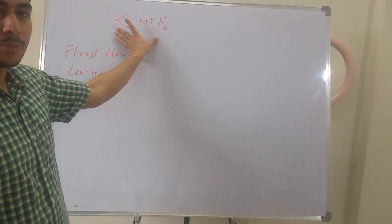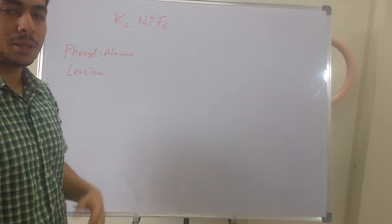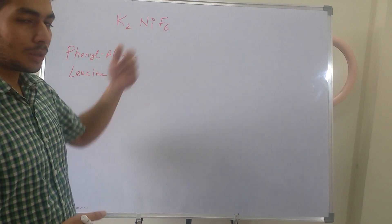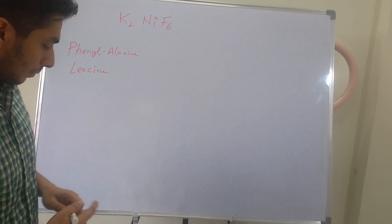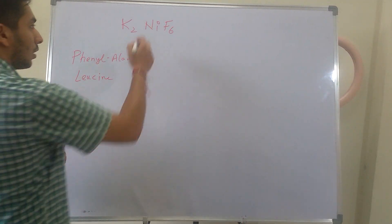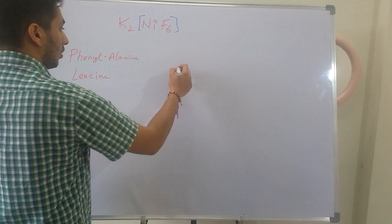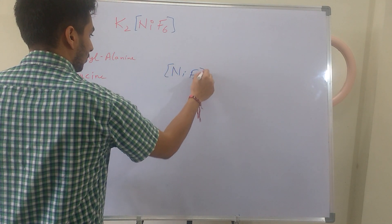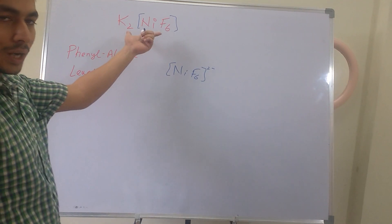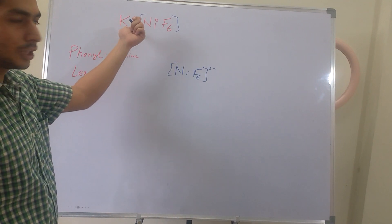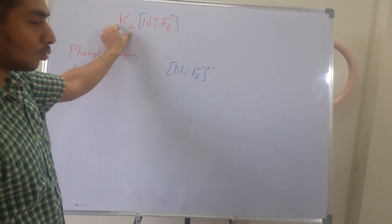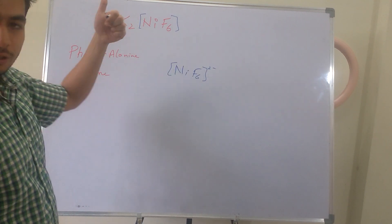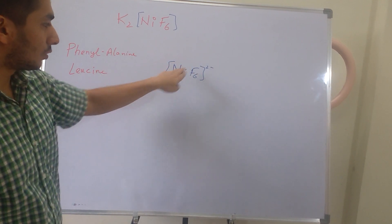The question gave a particular coordination compound — K₂NiF₆ — and asked for the number of unpaired electrons in this coordination compound. You can write NiF₆²⁻, because it will dissociate into ions in solution: it will dissociate into K⁺ and NiF₆. Since there are two potassium atoms, there is a two-minus charge, so we have NiF₆²⁻.